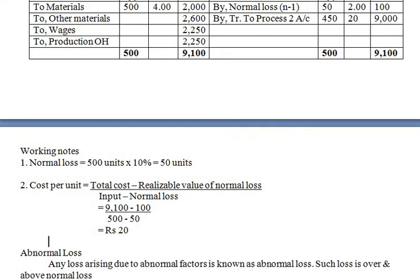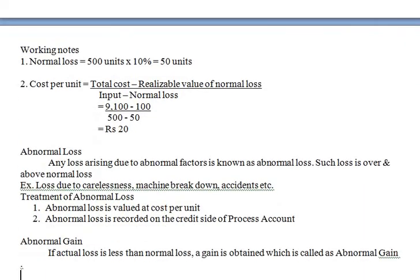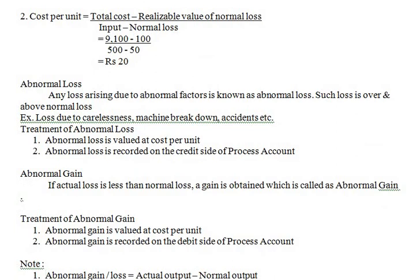Abnormal loss is any loss arising due to abnormal factors such as carelessness, machine breakdown, or accidents. Such a loss is over and above normal loss. Treatment: abnormal loss is valued at cost per unit, and abnormal loss is recorded on the credit side of the process account.